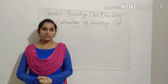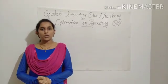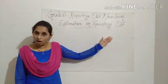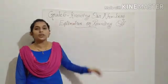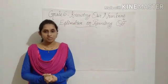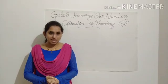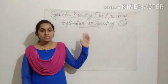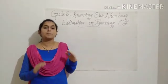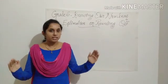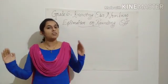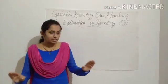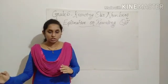Hello children. In today's video we are going to discuss about estimation or rounding off in the chapter 'Knowing Our Numbers'. Let us first understand the meaning of the word estimation. Estimation means approximation — not accurate, just approximation.